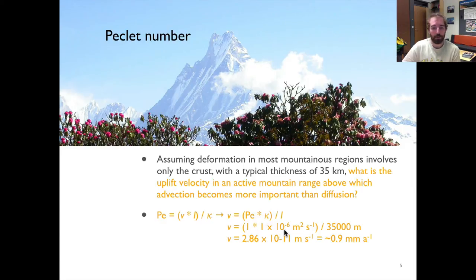If you plug in some numbers, your typical thermal diffusivity of 10 to the minus 6 meters squared per second divided by 35,000 meters, and here we're going to put a Peclet number of 1 because that's the point at which advection and diffusion are equal. So at any velocity greater than this would be advection being more important.